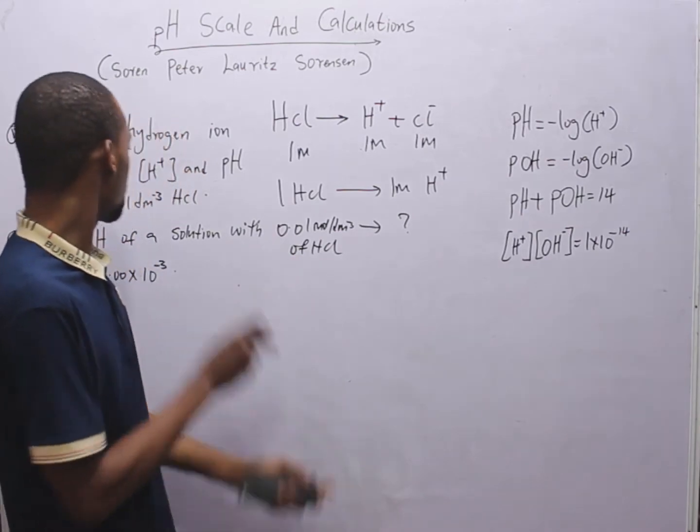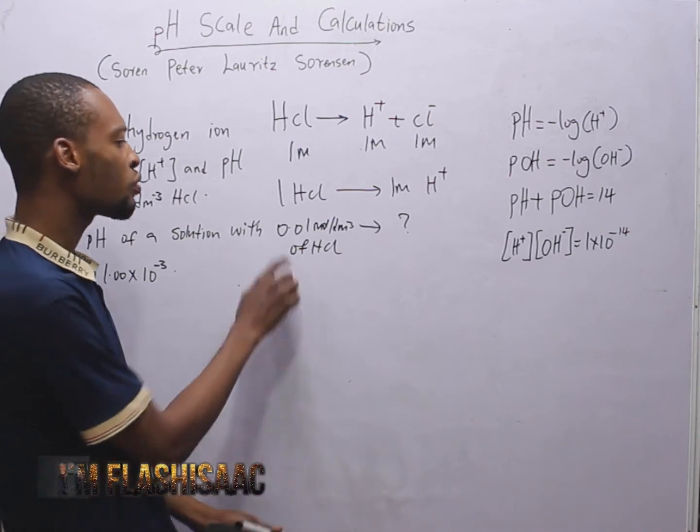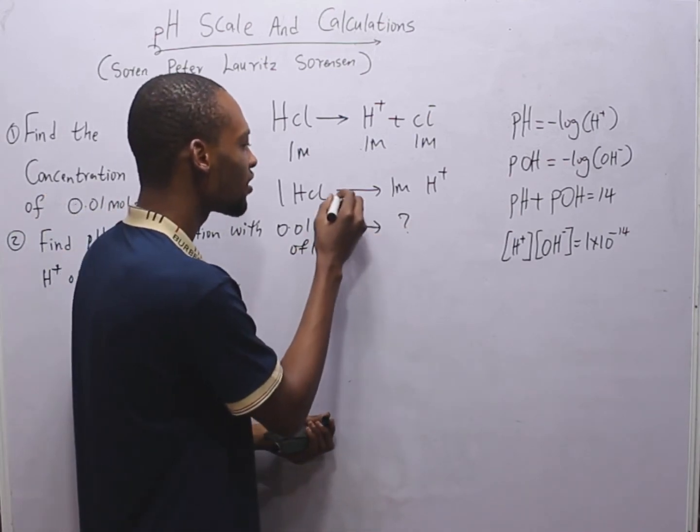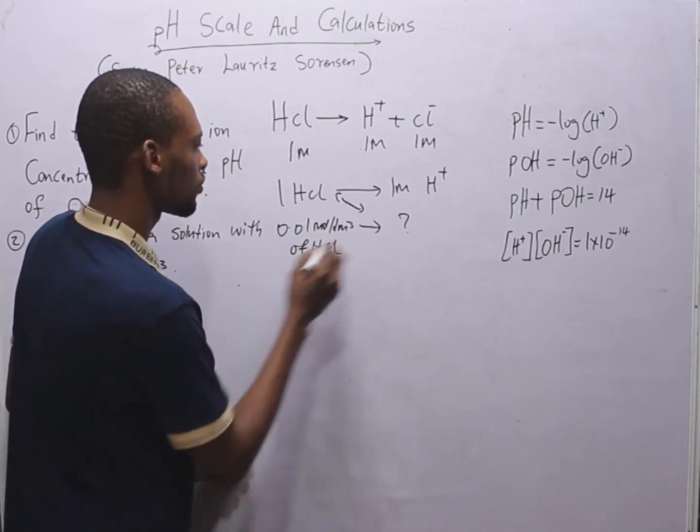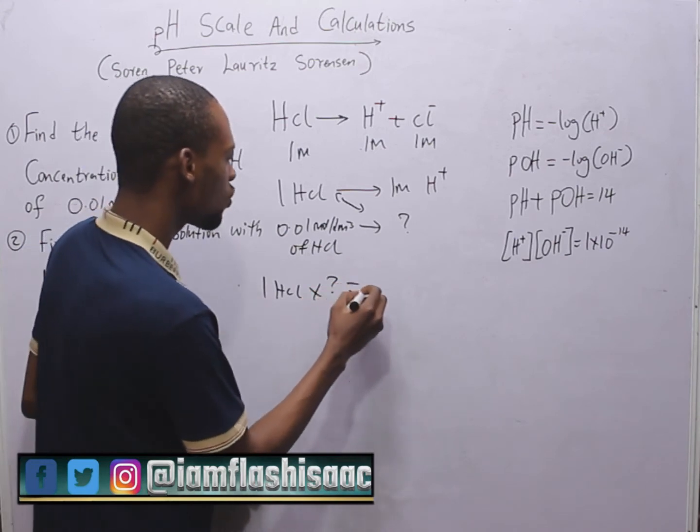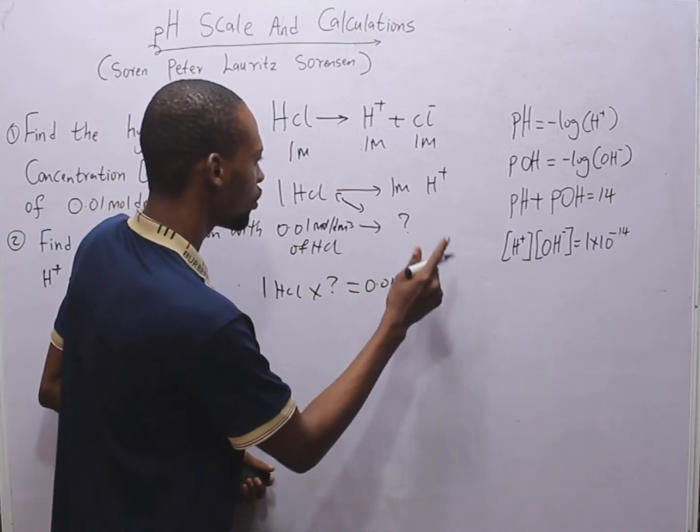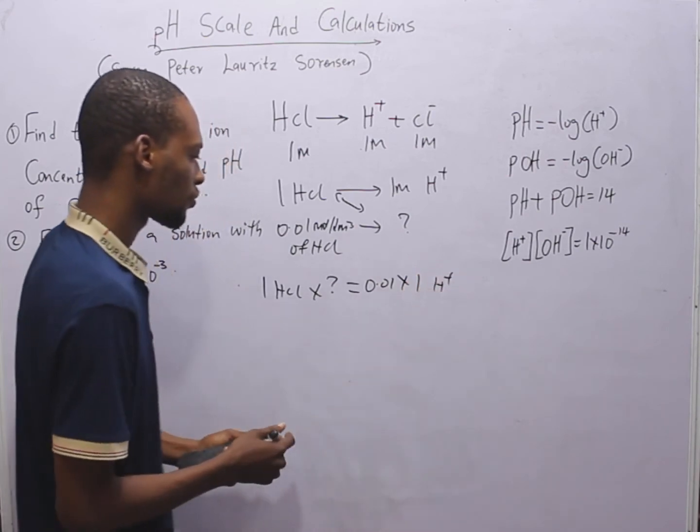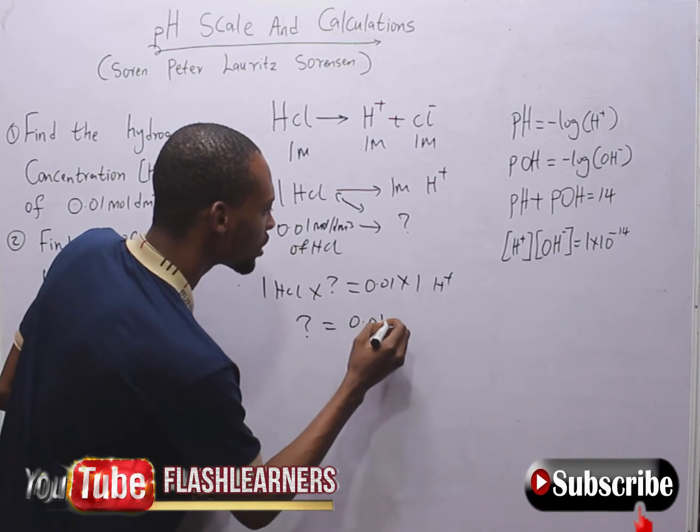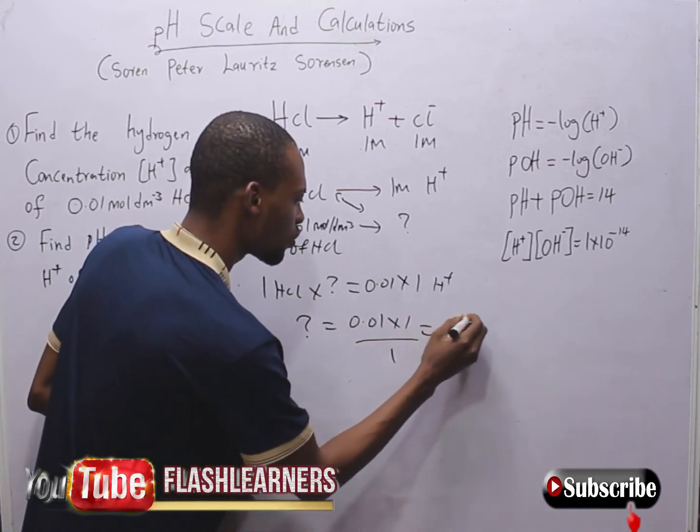So, if 1 mol of HCl equals 1 mol of H plus, we are told that 0.01 mol of HCl reacted, which means 0.01 mol of HCl, let's it be question mark, cross-multiply: 1 HCl times question mark equals 0.01 times 1 mol of H plus. Question mark is simply equals 0.01 times 1 all over 1, which equals 0.01.